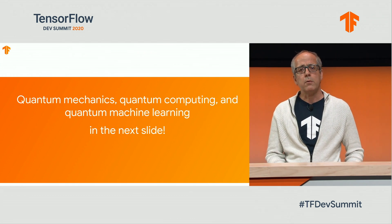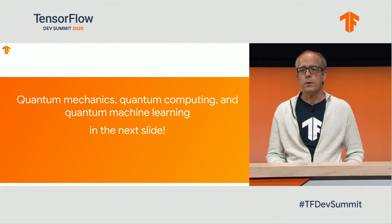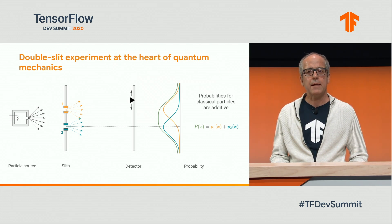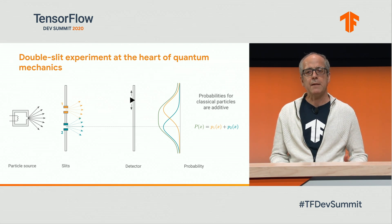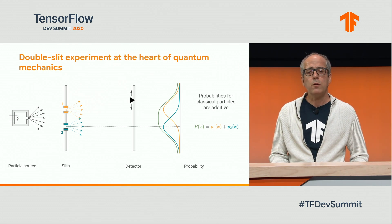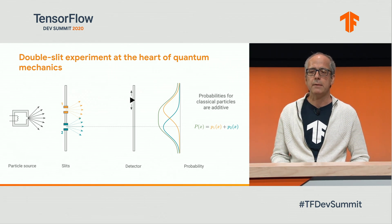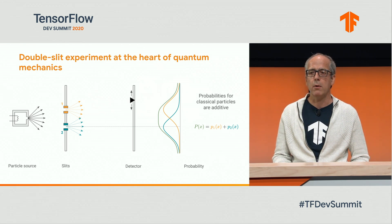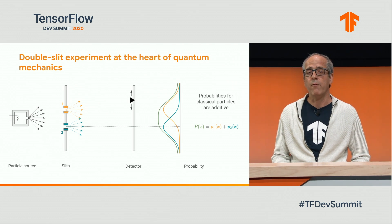For people with no background in quantum physics, I'd like to introduce quantum mechanics, quantum computing, and quantum machine learning in just one slide. This is the double slit experiment, at the heart of quantum mechanics. Consider a ball machine with random balls fired at a wall with two slits, and a screen behind it. The probability distribution of balls hitting the screen is simply the sum over both slit events — a Gaussian bump for each slit.